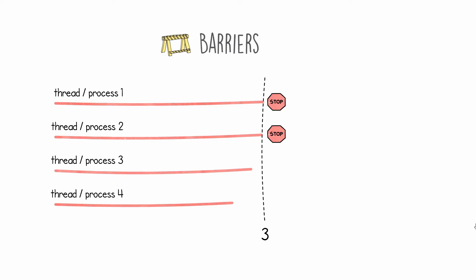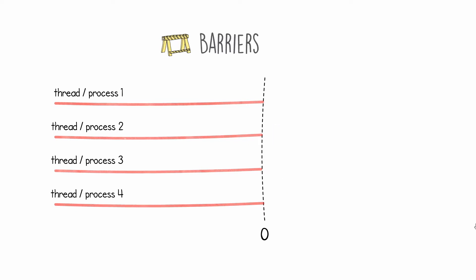Eventually another thread will arrive at that barrier and it is also blocked when it calls barrier.wait, and again the count goes down by one. In this example thread number three arrives next at the barrier, and it is subtracted by one. Finally thread number four arrives at this barrier, the thread is blocked and taken out of execution. Now because the barrier count is zero, the barrier releases all of these threads together and the count is reset back to four. These threads are now free to continue with their execution.